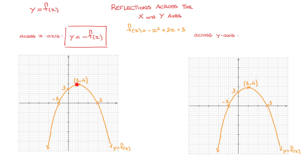The x-coordinate, on the other hand, will not be affected, and so the vertex will end up right here with coordinates 1, negative 4. Next, if I look at the y-intercept, its coordinates are 0, 3. Following this transformation, this point's y-coordinate will turn into its opposite, which would be negative 3. And so that y-intercept would be right here at negative 3.